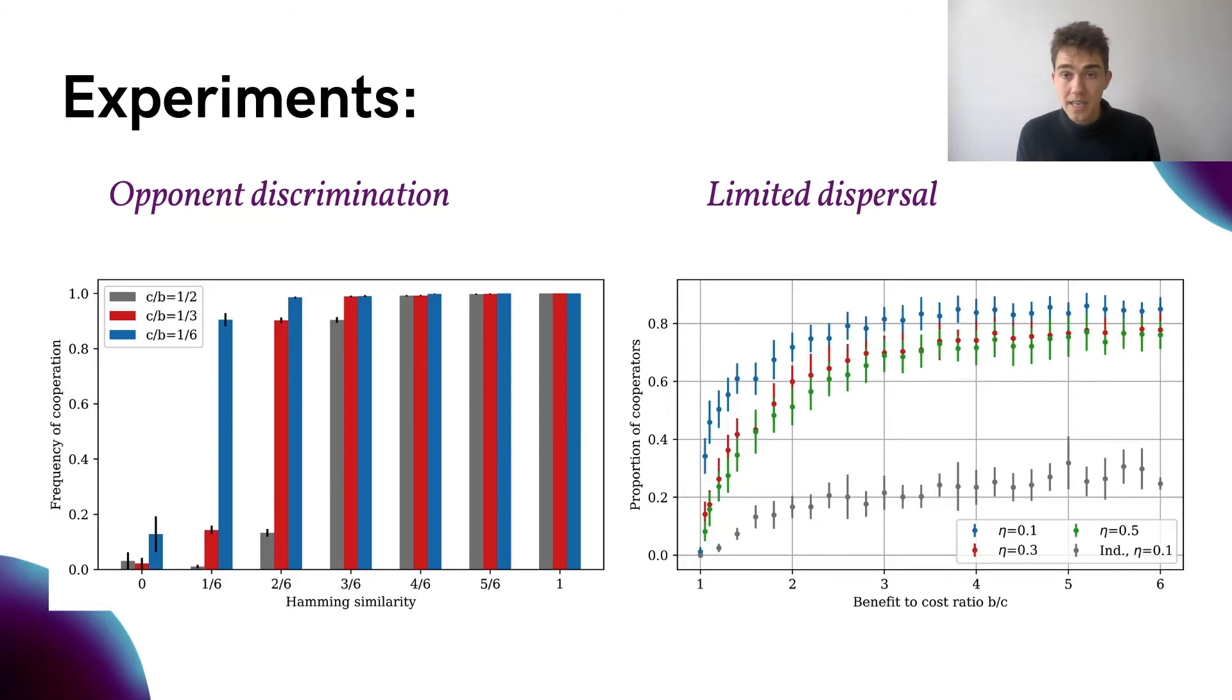A second experiment gives an agent no opponent discrimination, which means agents have only one strategy for all interactions. Here, we look at the effect of limited dispersal on the emergence of cooperation between agents. In biology, under the limited dispersal hypothesis, it is assumed that organisms do not disperse far from their birthplace, making them more likely to interact with genetic relatives. To model limited dispersal, we move from fully connected networks to random partition networks with community structure.